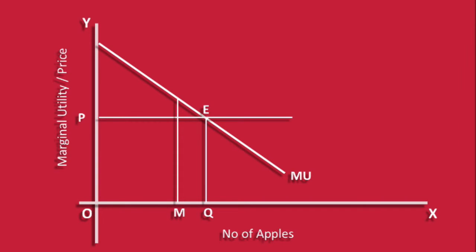If he consumes M number of apples, which is less than the equilibrium quantity Q, the price is MA. His marginal utility is MB. Marginal utility is greater than price. The consumer can increase his total utility by MBEQ. This is possible only if he consumes more.